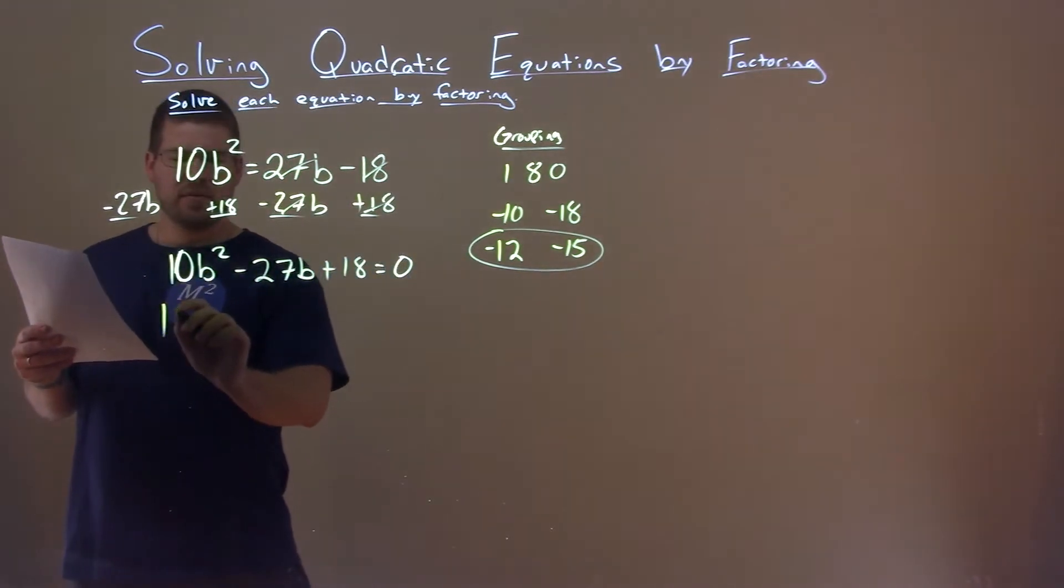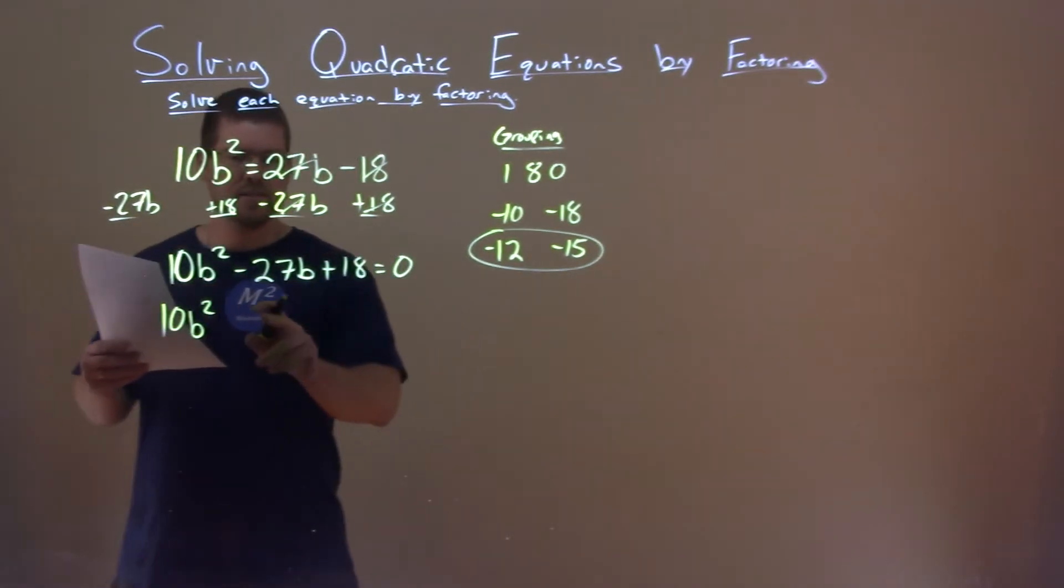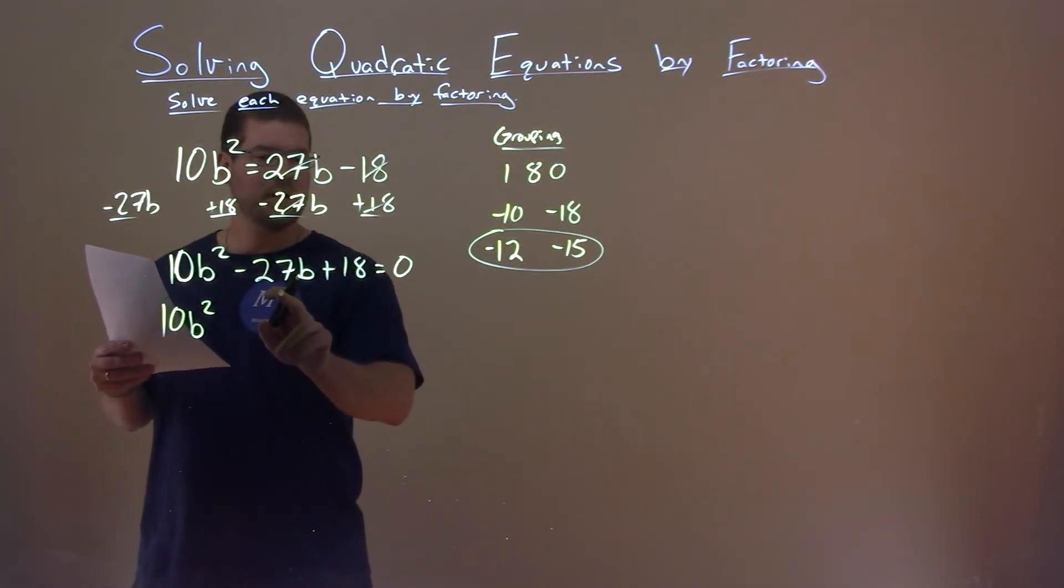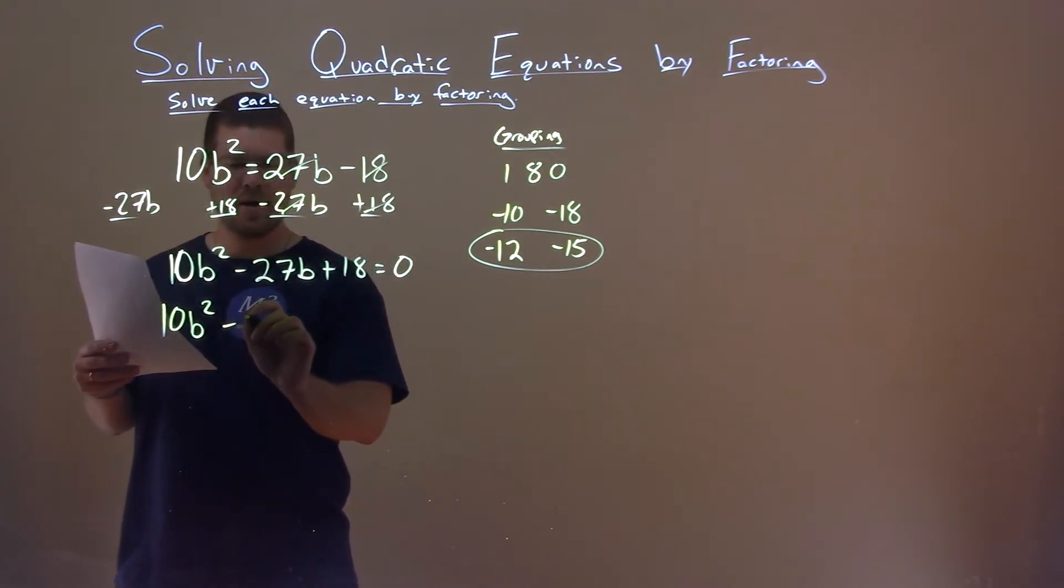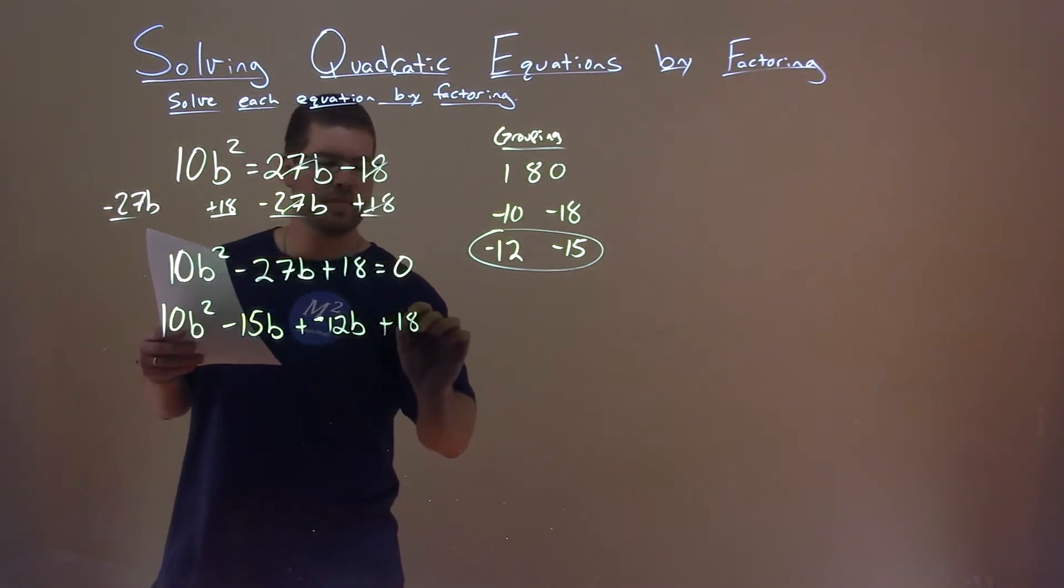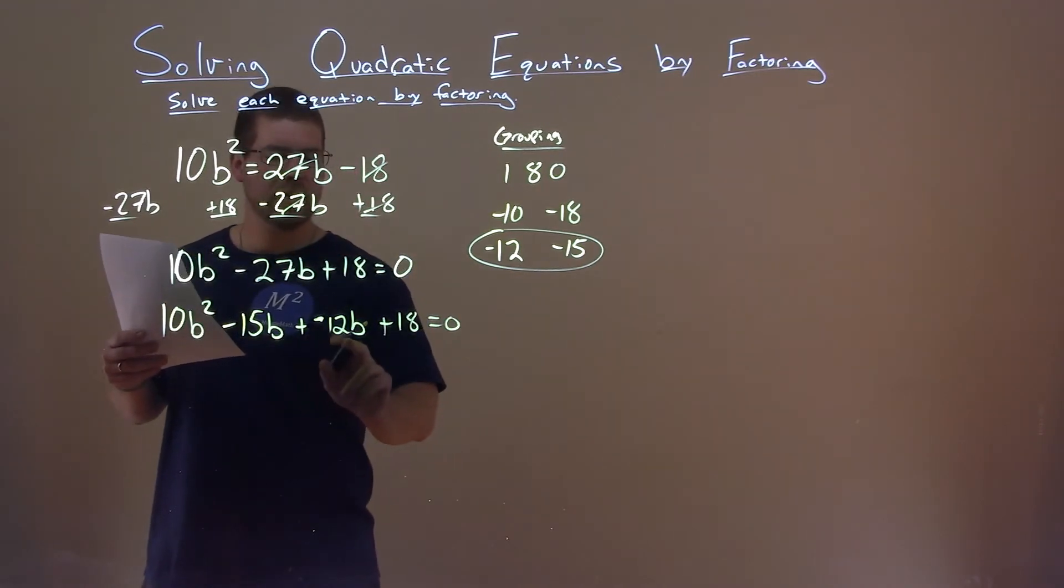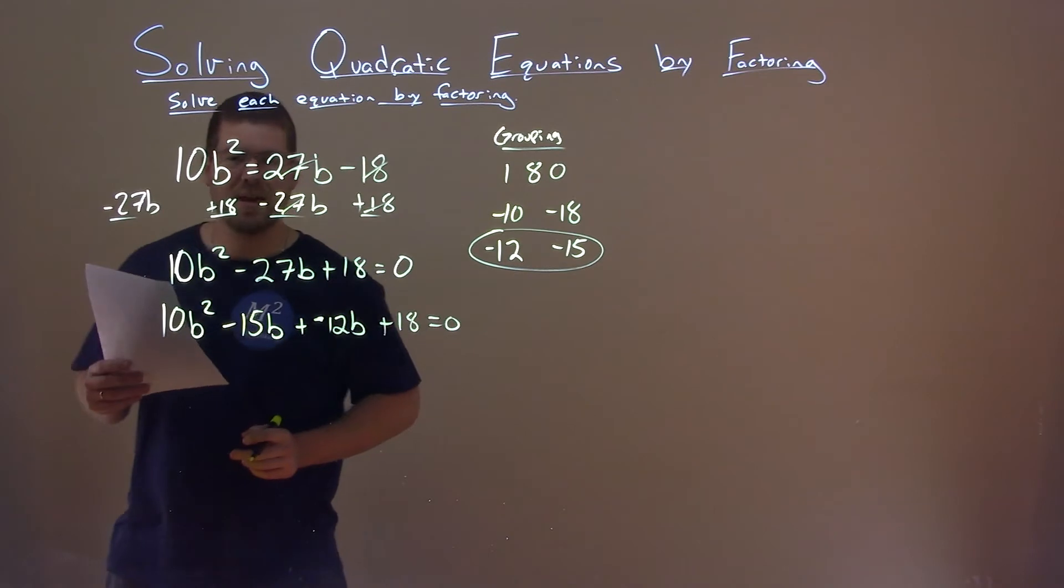So let's go rewrite this equation, 10b squared. What I'm doing here now is saying negative 27b is negative 15b plus a negative 12b. So I'm rewriting it like that: minus 15b here plus a negative 12b plus 18 equals zero. Again, these two parts, negative 15b and negative 12b, combine to be that negative 27b.